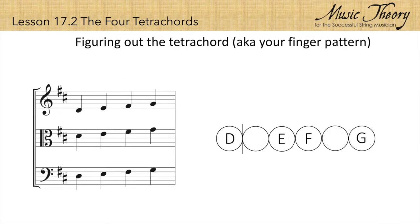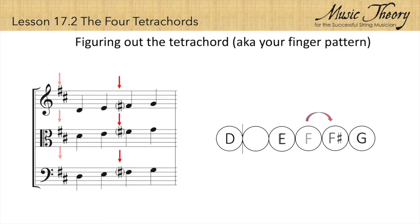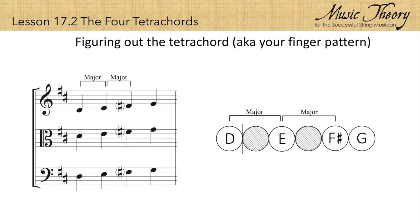This tetrachord is also a type of D tetrachord, but be careful — there is a key signature with two sharps. The F sharp in the key signature affects the F on the staff, raising it a half step. Now the tetrachord is built with two major seconds followed by a minor second. This is a D major tetrachord.